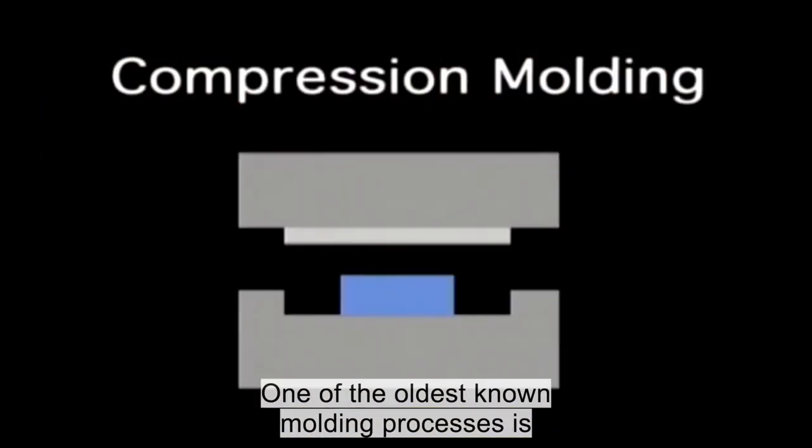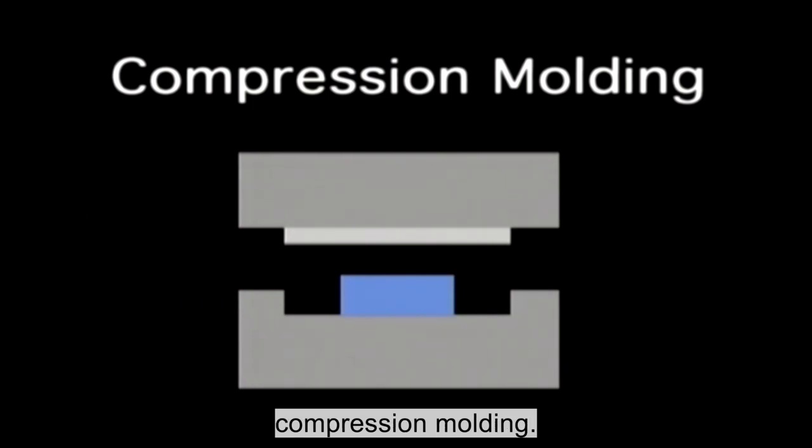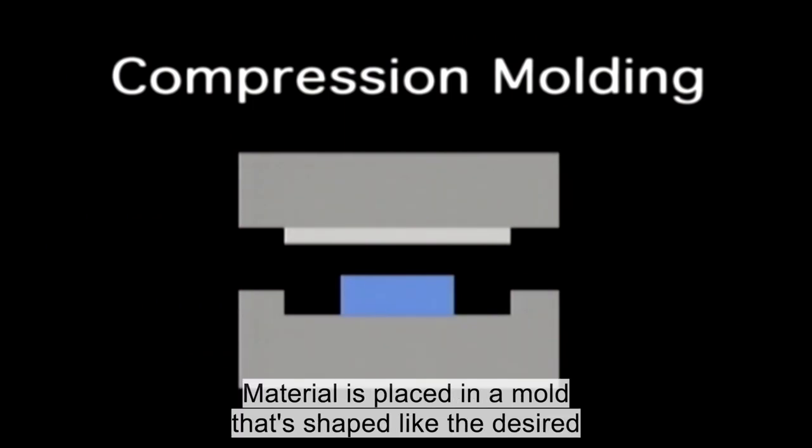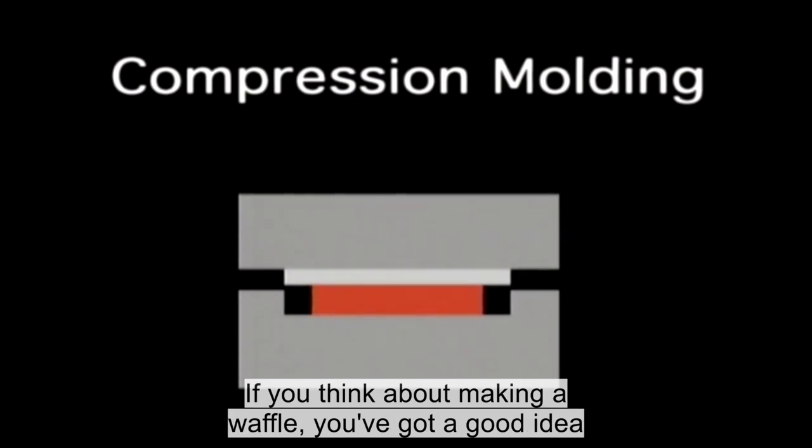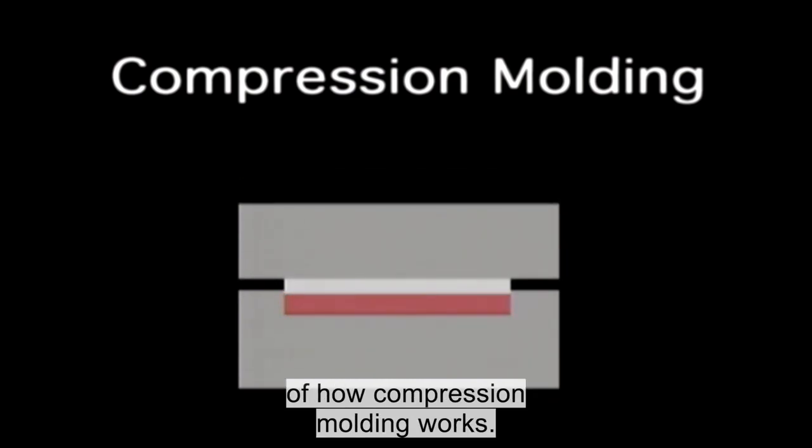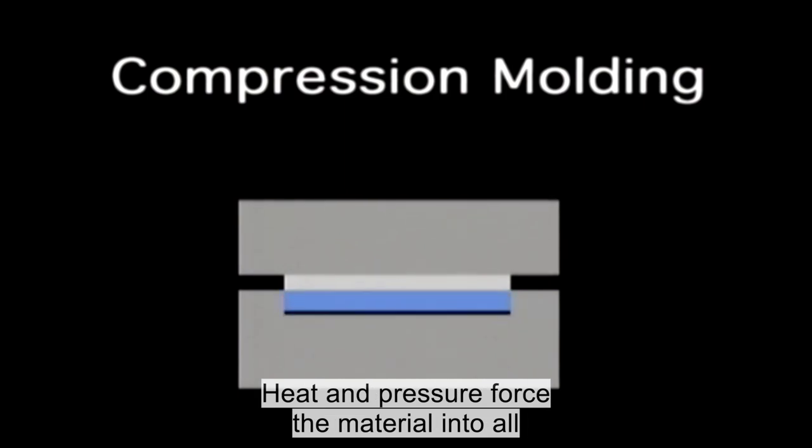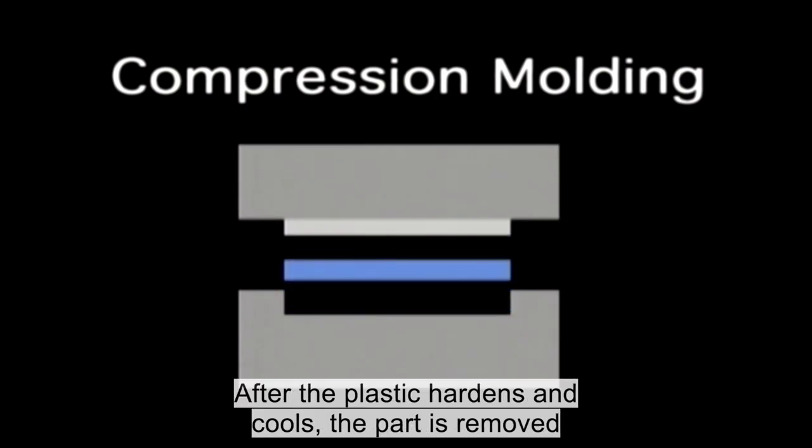One of the oldest known molding processes is compression molding. Material is placed in a mold that's shaped like the desired product or part, then formed by heat and pressure. If you think about making a waffle, you've got a good idea of how compression molding works. Heat and pressure force the material into all areas of the mold. After the plastic hardens and cools, the part is removed from the mold.